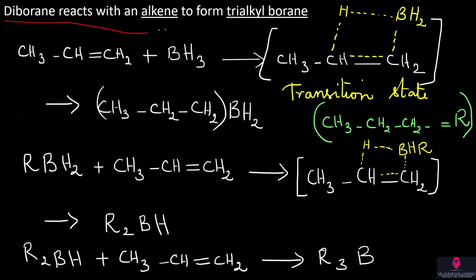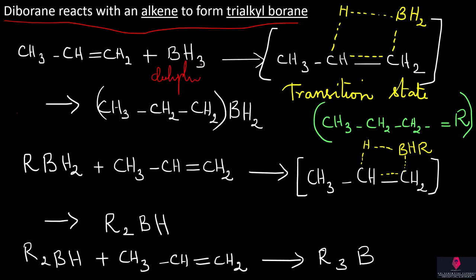Diborane reacts with an alkene to form trialkyl boron — this is the first addition reaction. This addition reaction is an electrophilic addition. BH3 consists of boron with three hydrogens. Boron acts as an electrophile.